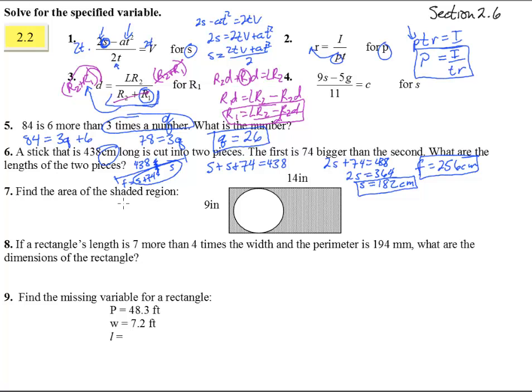Number 7, find the area of the shaded region. Notice we have a rectangle here, 9 by 14. We can find the area of that. 9 times 14 is, yeah, so the area right in here, is 126.